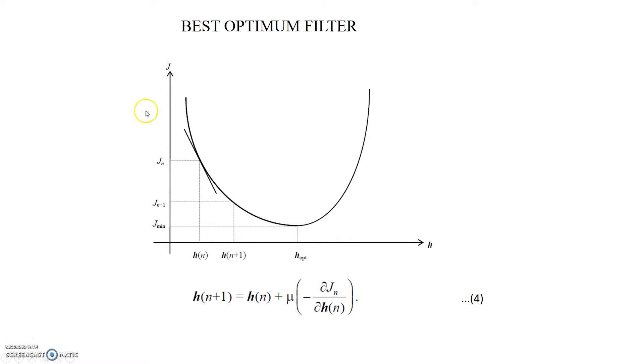If you plot the square of the error by taking it on y-axis and the filter coefficients on x-axis, then we will get a parabolic curve like this. And if we want to reach the h optimum, then we need to move towards right on x-axis.